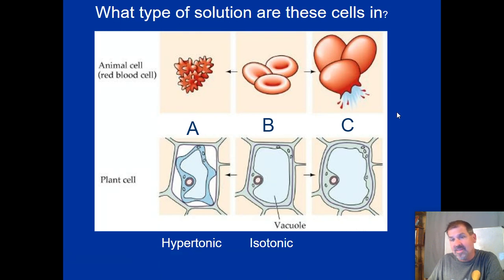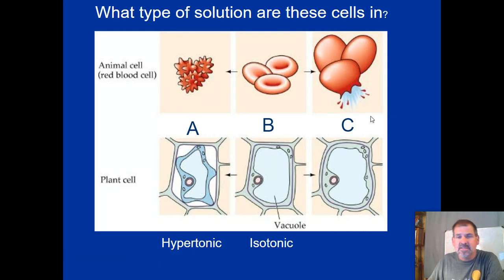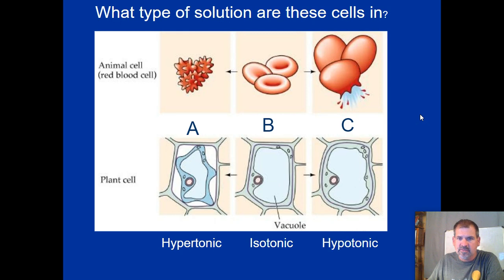When cells are bursting, water is moving into the cells, meaning the solute concentration is lower outside than inside the cell — the opposite of hypertonic — and that is referred to as a hypotonic solution.